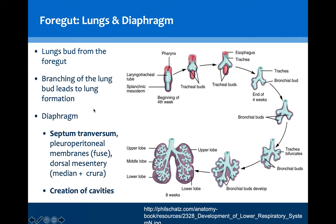The diaphragm, as we discussed during the session on folding, forms from the septum transversum. It has additional contributions from the pleuroperitoneal membranes and also the dorsal mesentery. The key function of forming the diaphragm is not just through its respiratory and ventilatory role, but actually through the separation of the axial skeleton and the torso into two separate cavities, the thoracic cavity and the abdominal cavity.